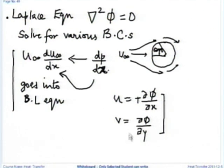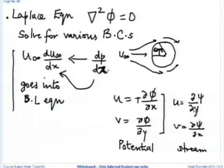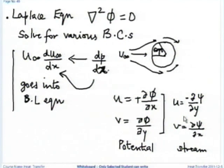For the stream function we write it with the negative sign. Whatever function we choose, it has to satisfy the continuity equation: ∂u/∂x + ∂v/∂y = 0. To satisfy that, we define either the stream function or the potential function in a specific way. If this answer is not comprehensive enough, please post the question on Moodle and we will answer it more fully.